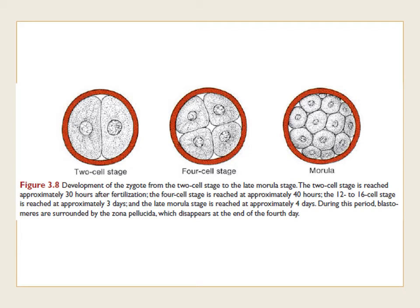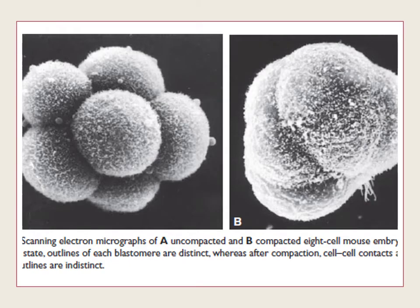Thirty hours after fertilization, the two-cell stage is reached. This is immediately followed by cleavage, characterized by a series of mitotic divisions increasing the number of cells. The cells during cleavage become smaller and smaller with each division and are called blastomeres. The 4-cell stage is reached after 40 hours post-fertilization. After the third cleavage, the 8-cell embryo will undergo compaction to separate the inner cell mass from the outer cells.